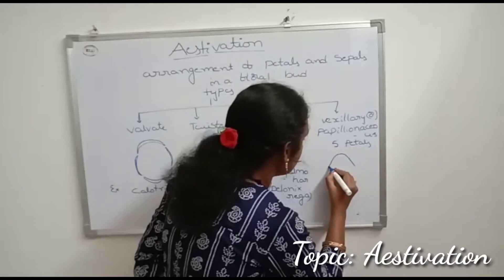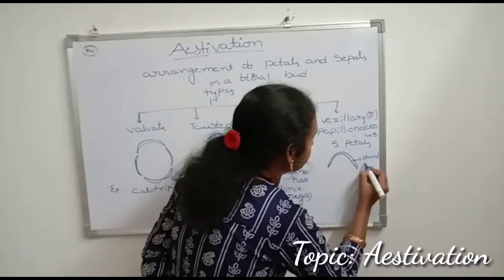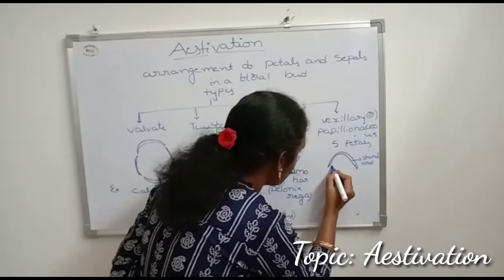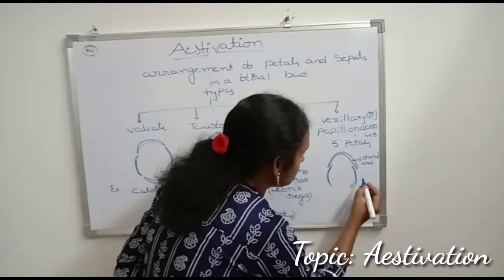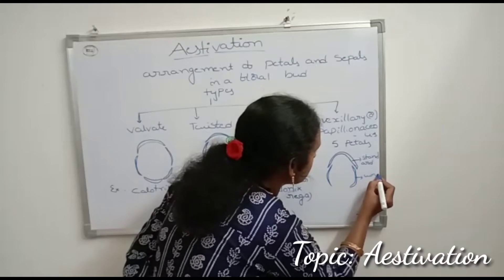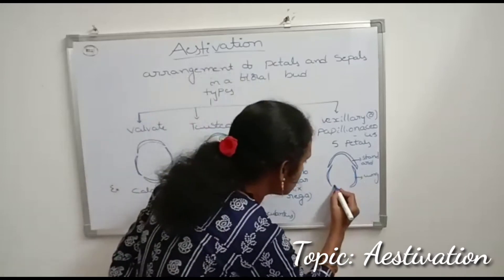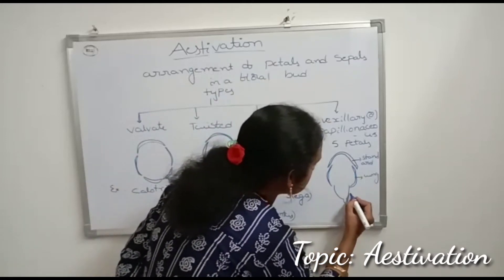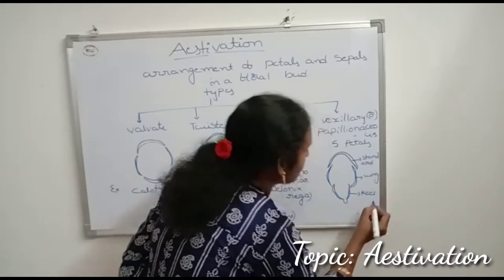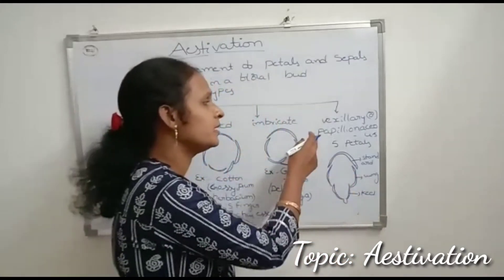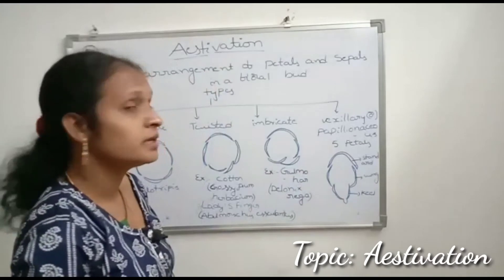The largest petal is called the standard petal. It overlaps the two smaller wing petals. The two smallest petals are called keel petals. This type of modification is called papilionaceae estivation, and it is useful to attract insects for pollination in Fabaceae plants.